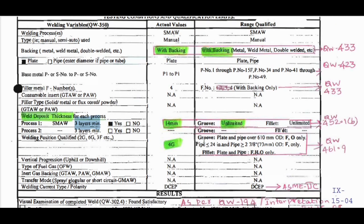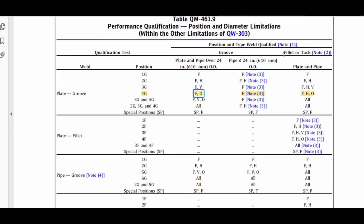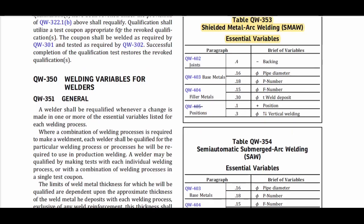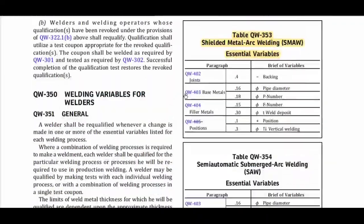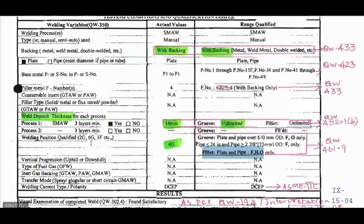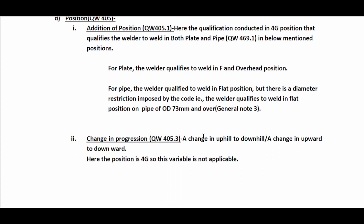For groove welds, the welder qualified in 4G position is qualified for plate and pipe over 610mm OD in flat and overhead positions. Between 24-inch and 610mm OD, the welder is qualified for flat position only. For fillet welds, he is qualified in flat, horizontal, and overhead positions. The last essential variable for SMAW is change in progression for vertical welding; since the qualification is conducted in 4G position, progression is not applicable.